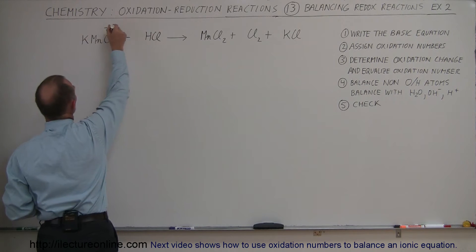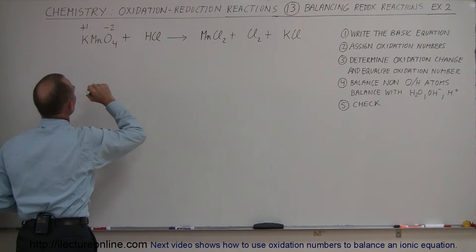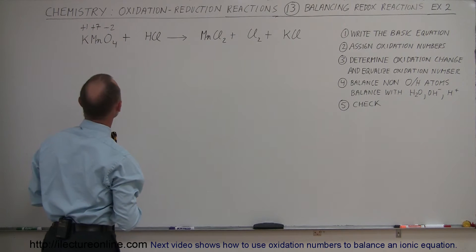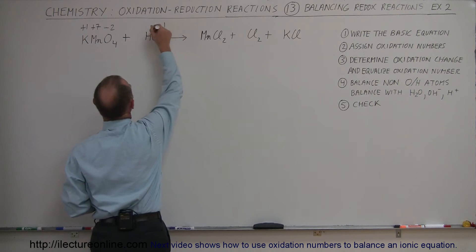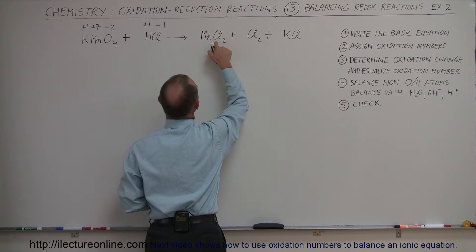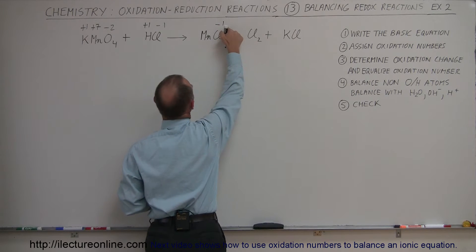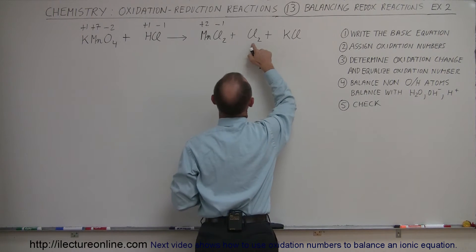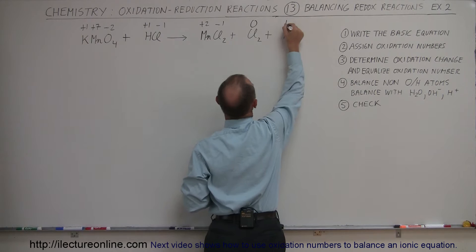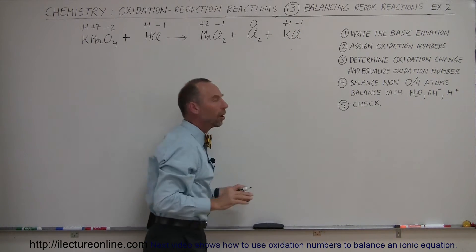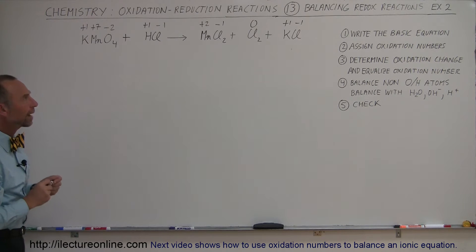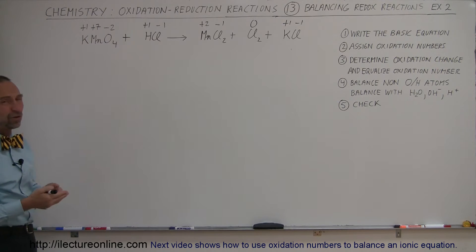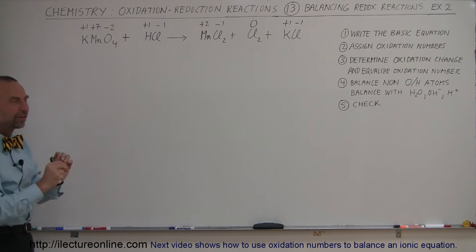Oxygen usually is easy — that's going to be minus 2. Potassium is always going to be plus 1. So now we have minus 8 plus 1, which gives this a plus 7 for that to be balanced. So manganese starts out at plus 7. Chlorine is minus 1, hydrogen is plus 1. Chlorine is going to be minus 1 times 2, which means this is plus 2. You can see manganese is going to go from plus 7 to plus 2. Chlorine gas here is going to be 0, and potassium is plus 1, chlorine minus 1. So we've assigned all the oxidation numbers. Some highly electronegative atoms such as oxygen and chlorine are fairly simple because they usually have a single oxidation state most of the time.